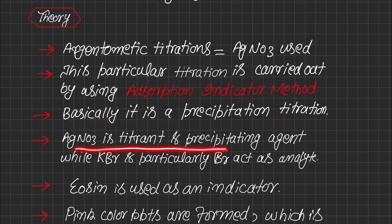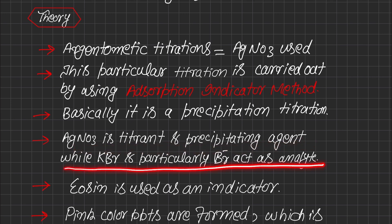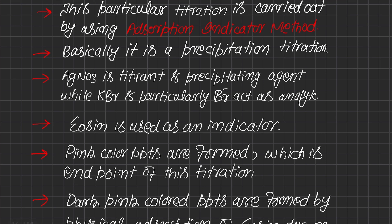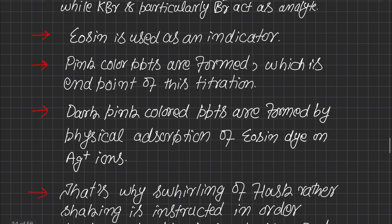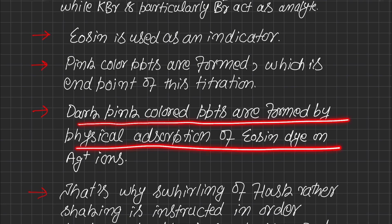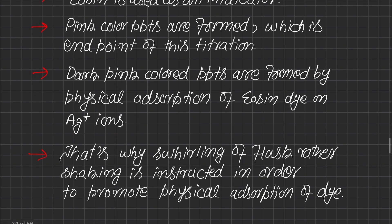Silver nitrate acts not only as a titrant but also as a precipitating agent, while KBr — and particularly bromide ions — acts as the analyte. Eosin is used as an indicator in this titration, mostly in acidic environment. Pink color precipitates are formed which is the end point of this titration. The pink color is slightly dark and purple in shade. This dark pink color appears due to physical adsorption of eosin dye on silver ions.